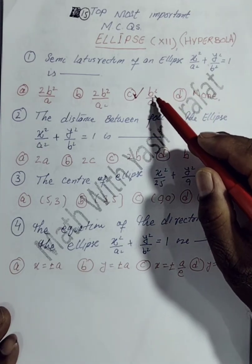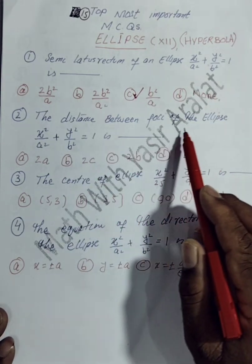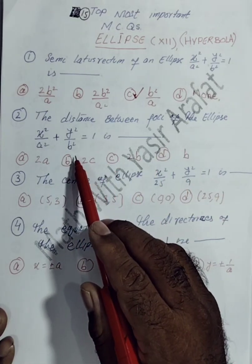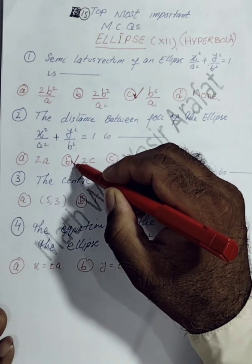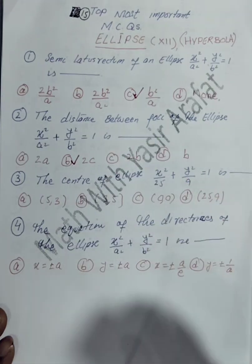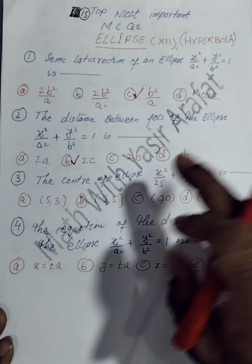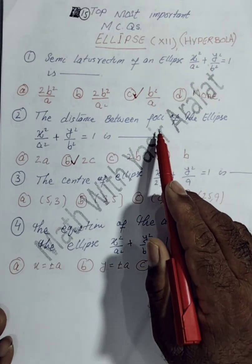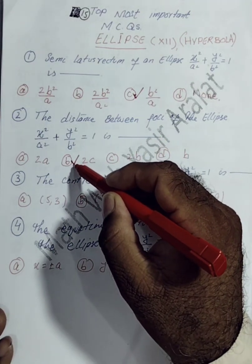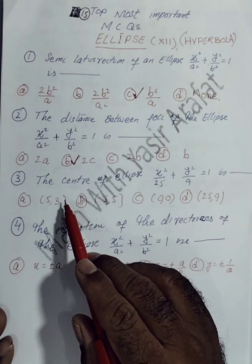The semi-latus rectum is B² over A. For the second MCQ, the distance between foci of the ellipse is 2C. Remember: the distance between the major axis endpoints is 2A, the minor axis is 2B, and the distance between foci is 2C. So option B is correct for the second MCQ.